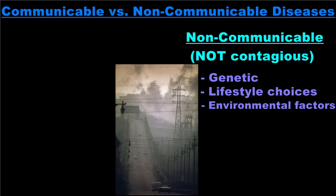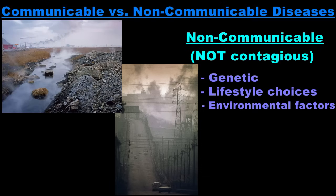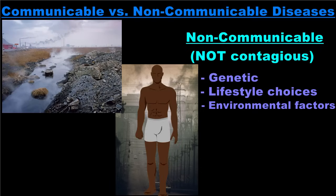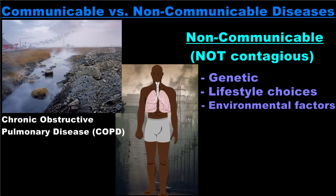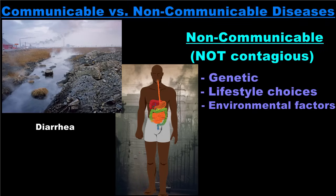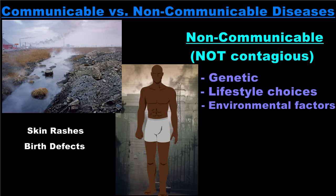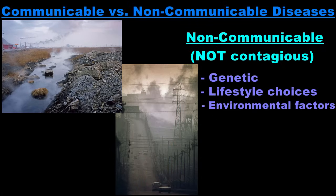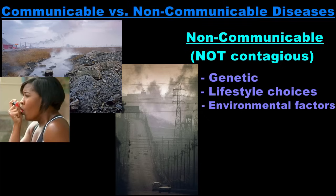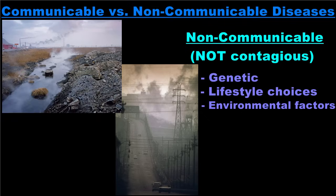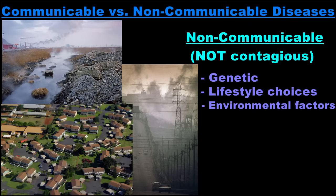Another cause of non-communicable diseases involves environmental factors like pollution. Chemical contaminants in air, soil, or water can find their way into our bodies through inhalation, absorption through the skin, or consumption of contaminated food or water. Repeated exposure to chemical contaminants can cause illnesses like chronic obstructive pulmonary disease (COPD), lower respiratory infections, gastric issues like diarrhea, disruption of the endocrine system which controls hormones, skin rashes, birth defects, and a host of different cancers. Environmental factors can also serve as triggers for other diseases like asthma, psoriasis, or herpes. Environmentally induced illnesses may be experienced by many people in a community, not because they are contagious, but because the people of the community share the same environment.